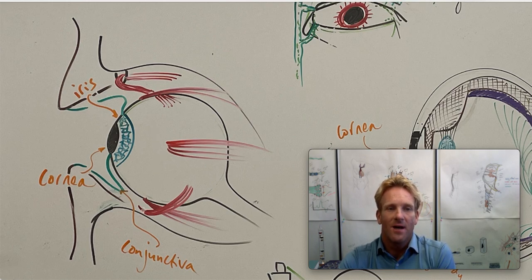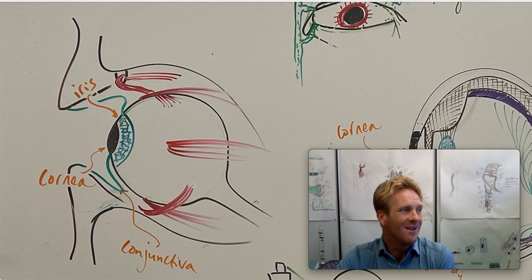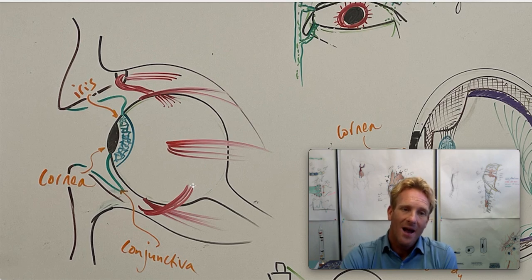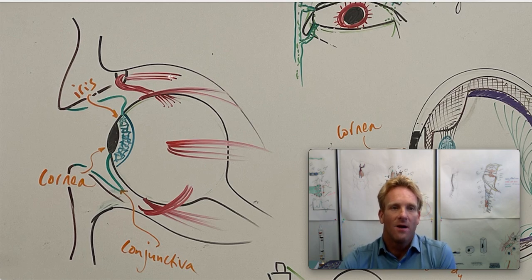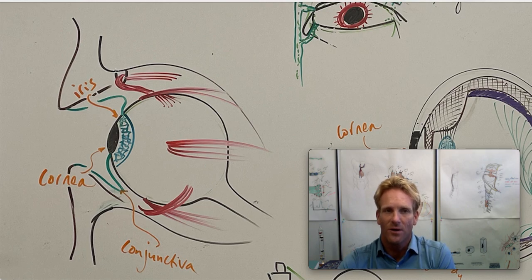This muscle down here that starts on the medial side of the orbit and wraps the lateral side of the eye is called the inferior oblique. When that contracts, it causes the eye to look upwards and out, so up and lateral. And then this is called the superior rectus. This is a muscle that loops through this little pulley of connective tissue called the trochlea. When it contracts, it pulls on the back of the eye to cause it to look down and out, so down and laterally.